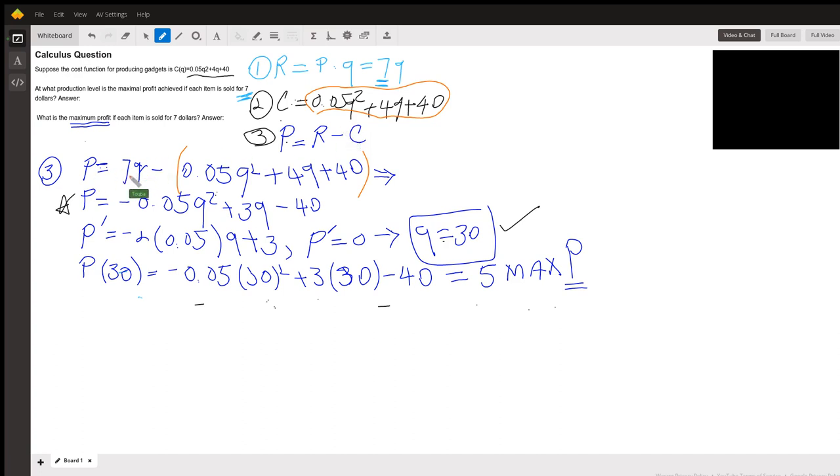P equals 7Q as revenue minus cost. After simplifying, P or profit equals negative 0.05Q squared plus 3Q minus 40.